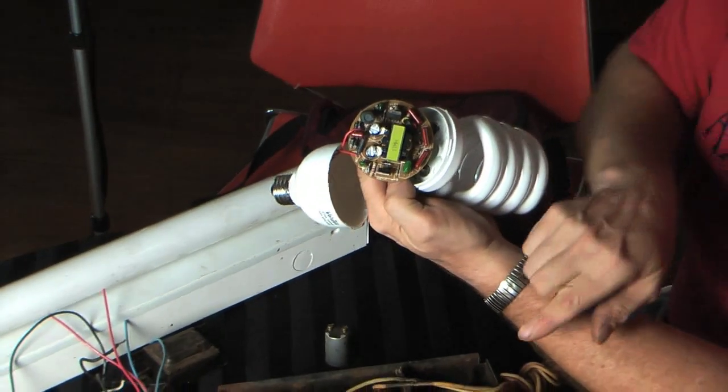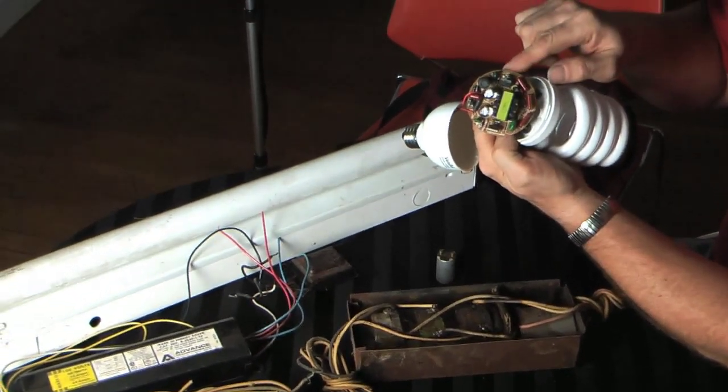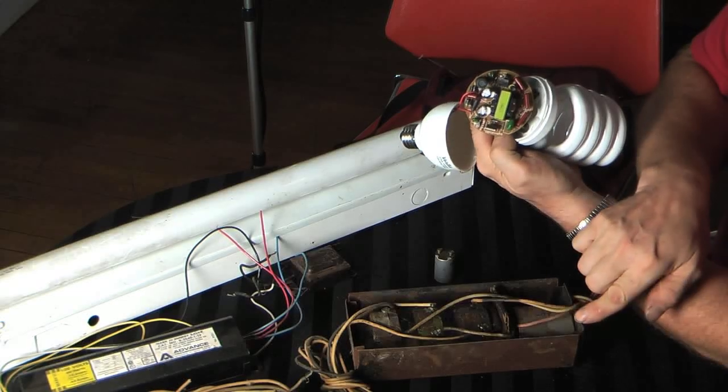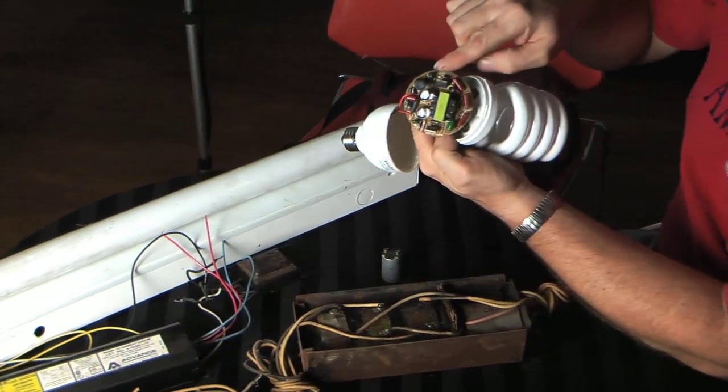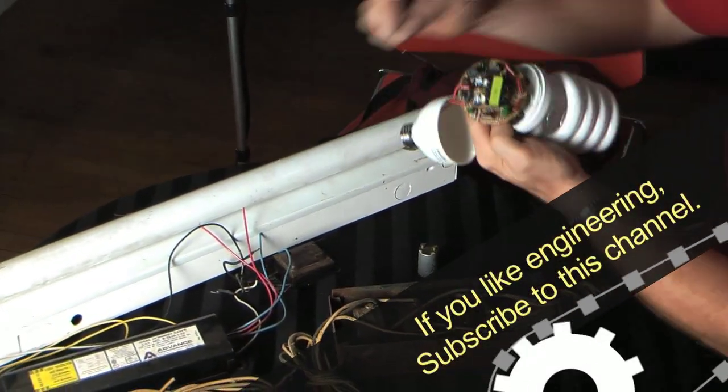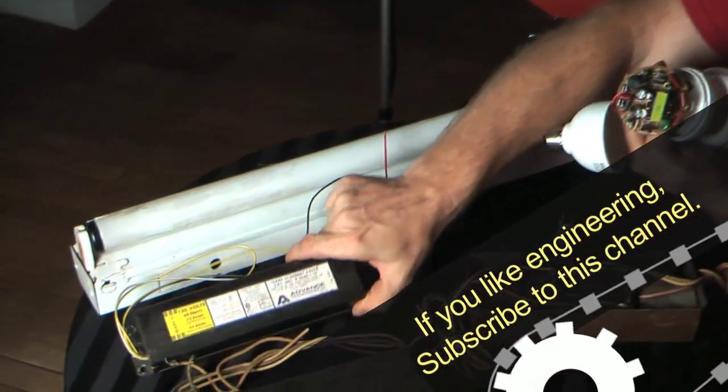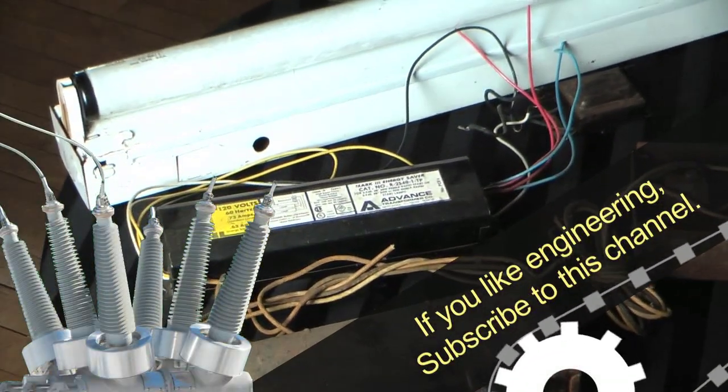But one thing the old magnetic ballast has that the electronic ballast does not. The old magnetic ballast will last 50 years if it's cared for. The new electronic ballast will only last the lifetime of this lamp. And the ones that run the straight tubes in this kind of a case, if they last five years, they're doing good.